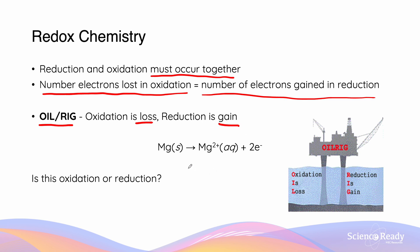Look at the equation below involving magnesium. Have a moment to pause the video and think about whether this is an example of reduction or oxidation. If you said that this was an oxidation reaction, you are correct. What you have noticed is that the charge of the magnesium has gone from zero to 2+, indicating that it must have lost two negative electrons in order to gain two positive charges. We can also tell that this is loss because the electrons are on the product side, having been relieved from the magnesium metal.